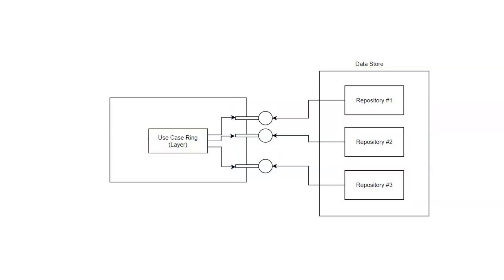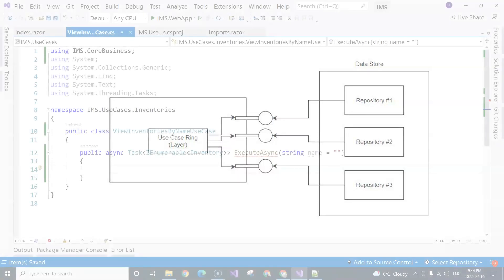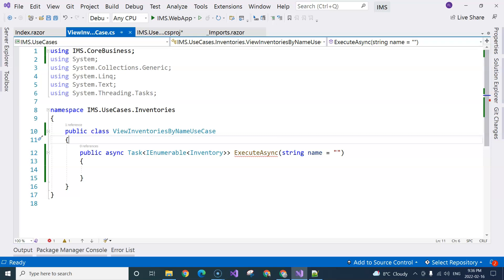Therefore, our use case is not dependent on the plugin. Our use case is dependent on this abstraction. And this is one of the key concepts of clean architecture. I'm going to use the interface before creating it.